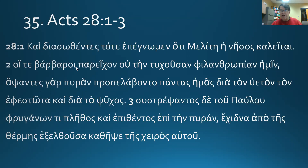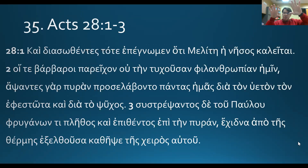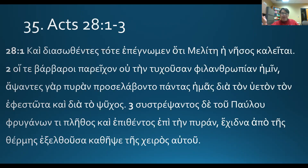Verse two: 'and the barbarians' — this doesn't mean they're uncivilized. Barbarian would not be a good translation, because the sense is these are not the Greeks. If you divide the world into a chart, you have Jews and non-Jews, Jews and Gentiles; and among the Gentiles, you have Greeks and barbarians. I don't think Paul or Luke would call Romans barbarians. These are just islanders — that's the way the NIV translates it, although that really isn't what it says.